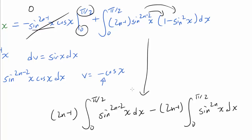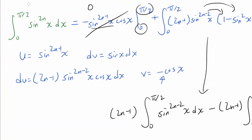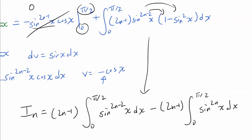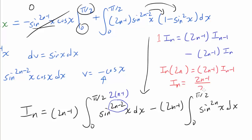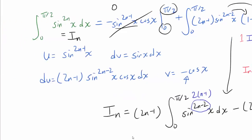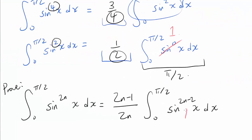The boundary term is 0 since cos(π/2) = 0 and sin(0) = 0. Distributing and splitting the integral, letting I_n denote ∫₀^{π/2} sin(x)^{2n} dx, we get I_n = (2n−1)·I_{n−1} − (2n−1)·I_n. Moving the I_n term to the left: 1·I_n + (2n−1)·I_n = 2n·I_n = (2n−1)·I_{n−1}, so I_n = ((2n−1)/(2n))·I_{n−1}. That is exactly what we wanted to prove.